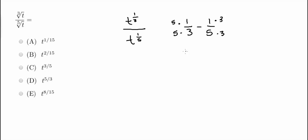So now here I'm left with 5 over 15 minus 3 over 15, which is equal to 2 over 15. And this is going to be our resulting exponent. So this is equal to t to the 2 over 15th power.